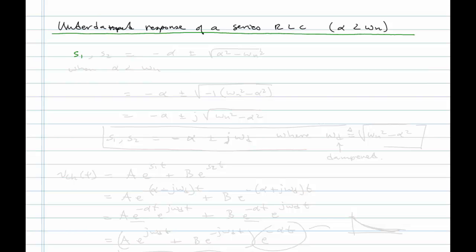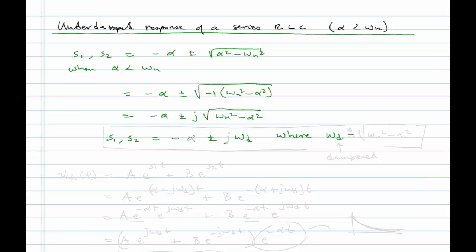Let's write the roots again. We have S1, S2 equal to minus alpha plus or minus the square root of alpha squared minus omega_n squared. For the case where alpha is less than omega_n, I'll rewrite this as minus alpha plus or minus the square root of negative one times (omega_n squared minus alpha squared), pulling out the J. I'll replace the remaining radical — omega_n squared minus alpha squared — with omega_D, where omega_D is defined as the square root of omega_n squared minus alpha squared. The D stands for damped.